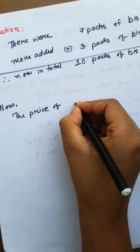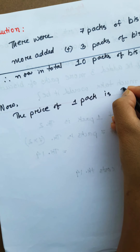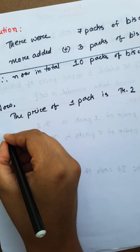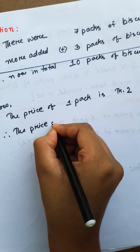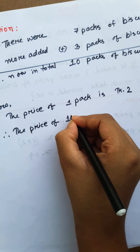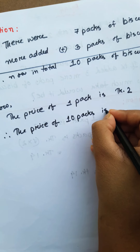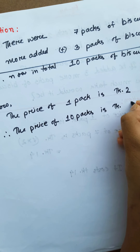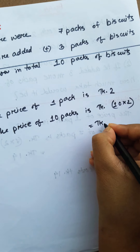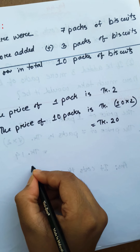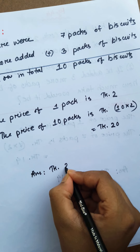In total, 10 packs of biscuits. 1 pack is taka 2. Therefore, the price of 10 packs is taka 10 into 2, which is taka 20. So the answer is taka 20.